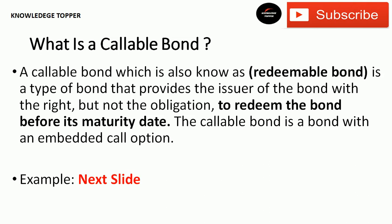It means an issuer can redeem their bond after some specific time from its issuance. For example, a corporation can pay the principal of the bond to bondholders before the maturity date of the bond.